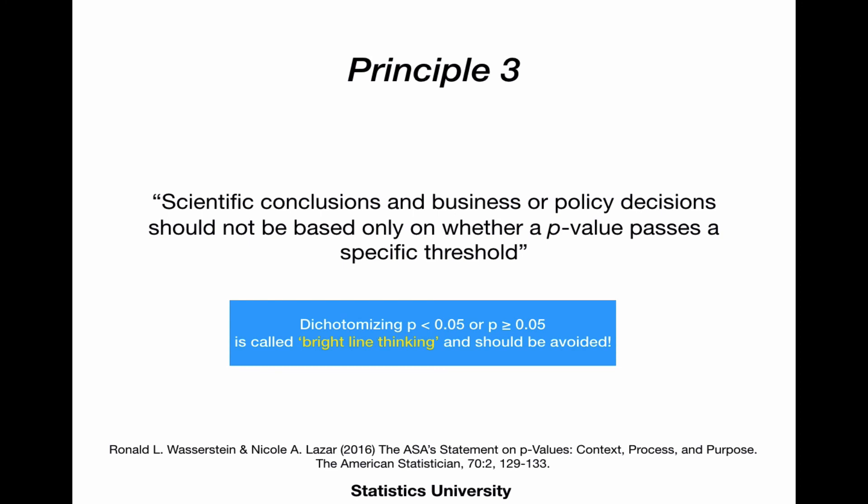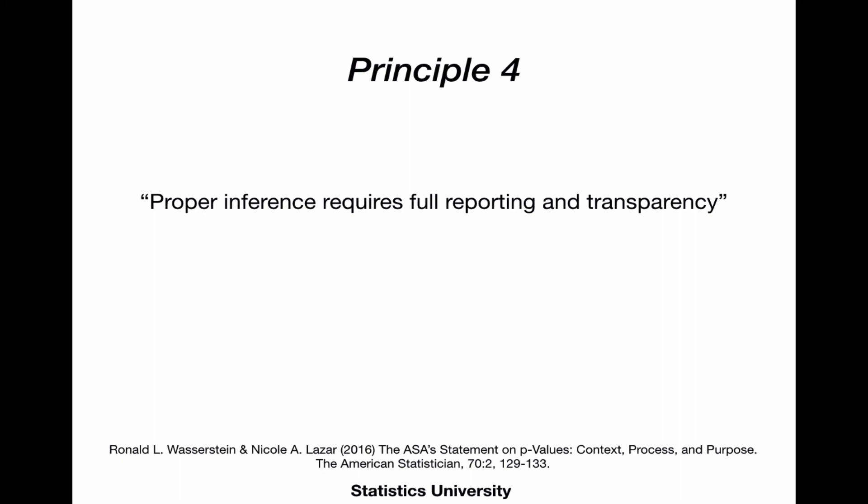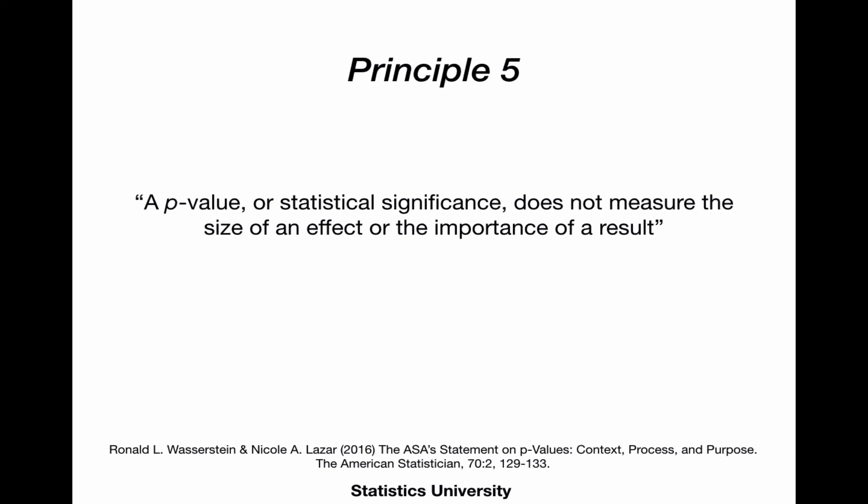And scientific conclusions and business or policy decisions should not be based only on whether a p-value passes a specific threshold. So that p below 0.05 or equal or above 0.05 is called bright-line thinking. And we are taught not to use that bright-line thinking and avoid artificial thresholds like this. Proper inference requires full reporting and transparency.